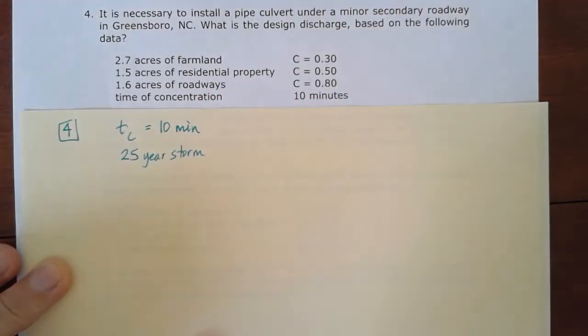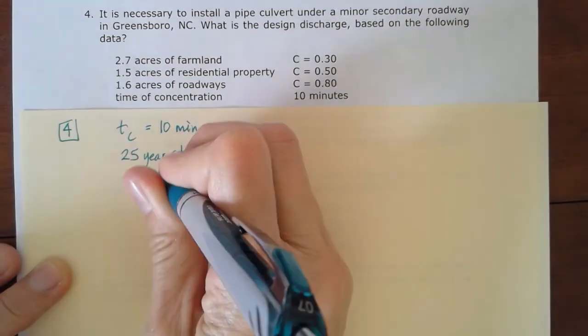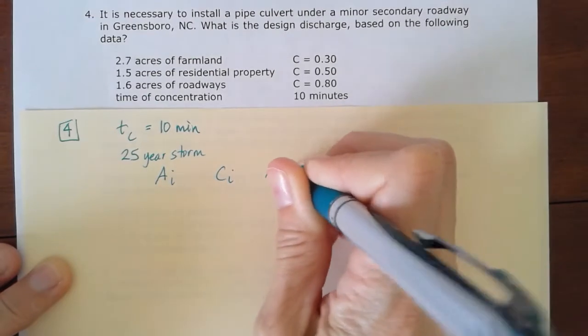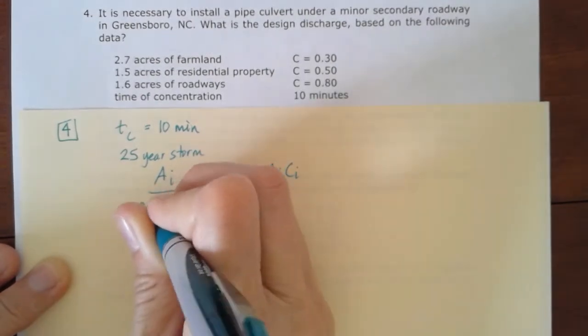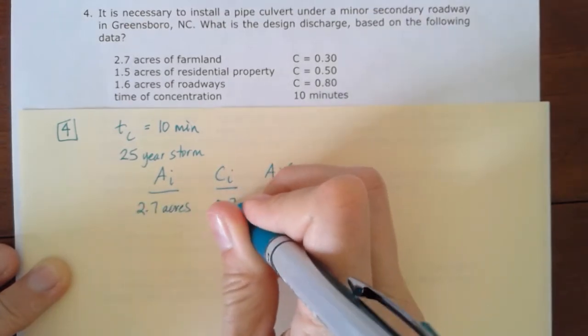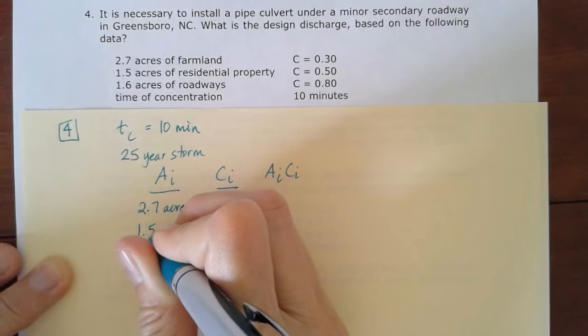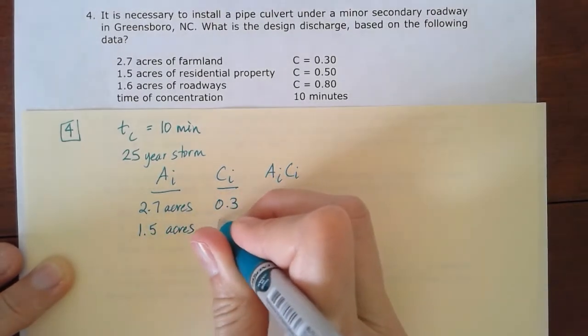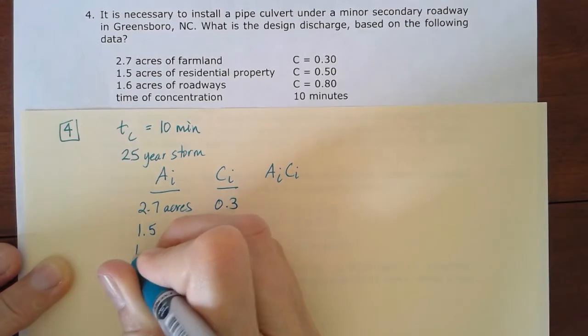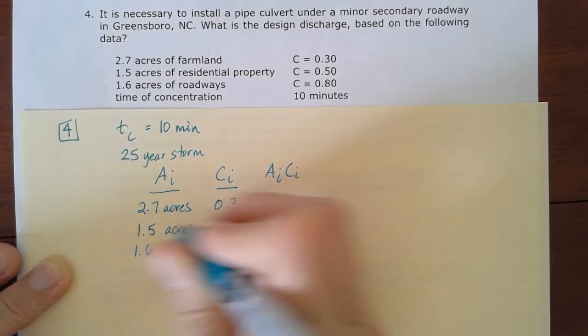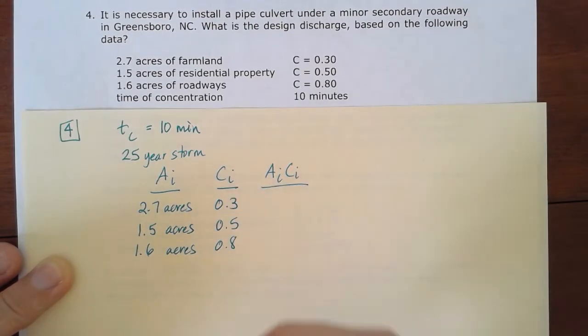And then let's go ahead and find that runoff coefficient here. So we have a couple different individual areas and different individual coefficients for those areas. So make a list of those. We have 2.7 acres, which has a runoff coefficient of 0.3. We have 1.5 acres, which has a runoff coefficient of 0.5.